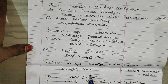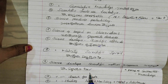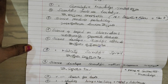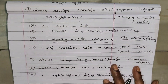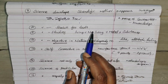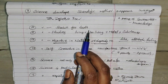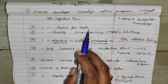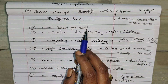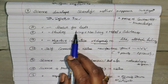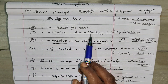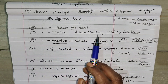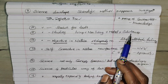Science increases scientific method. Science searches for truth. Science studies living, non-living, metal, and substances.